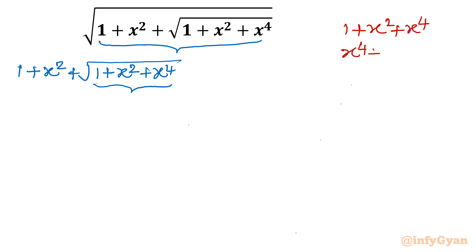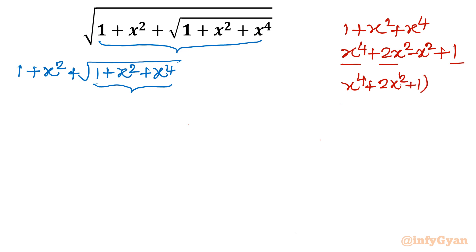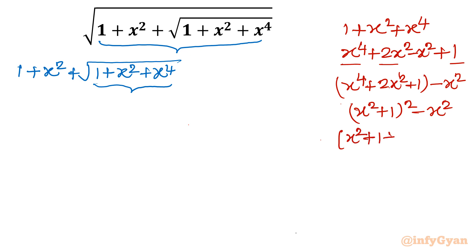A few manipulation steps I will use here. x power 4 can be written as it is. I will split 2x square as 2x square minus x square, plus 1. So from x power 4, 2x square, and 1, I will collect x power 4 plus 2x square plus 1 in one bracket minus x square. This is a perfect square: (x square plus 1) whole square minus x square — a difference of two squares. Applying that, I write (x square plus 1 plus x)(x square plus 1 minus x).